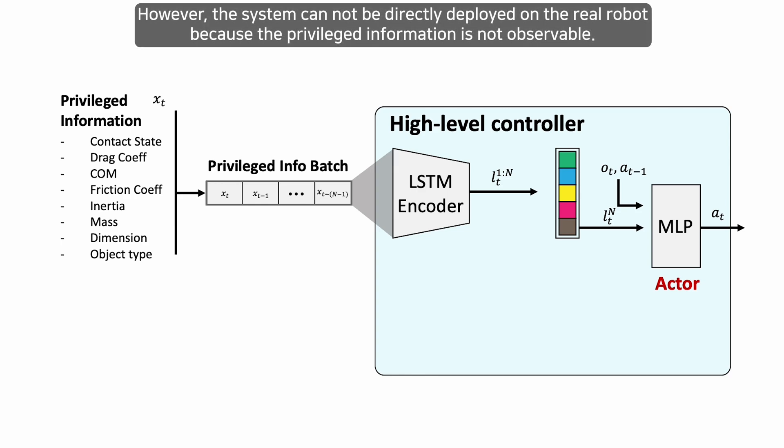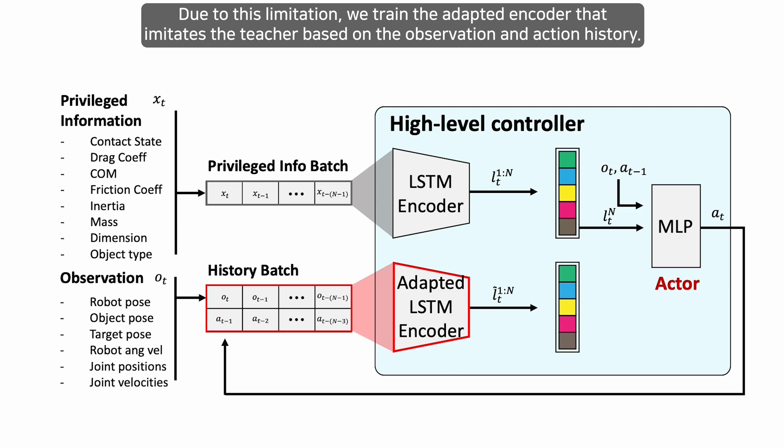However, the system cannot be directly deployed on the real robot because the privileged information is not observable. Due to this limitation, we train the adapted encoder that imitates the teacher based on the observation and action history.